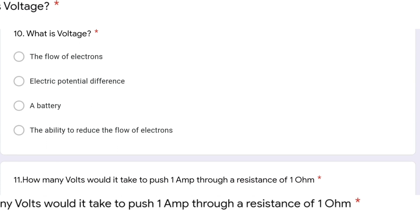In this question: what is voltage? Voltage is not the flow of electrons — that is current. It is not the ability to reduce the flow of electrons — that is resistance. The correct answer is that voltage is electric potential difference.